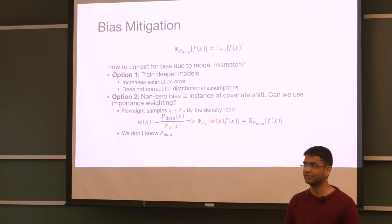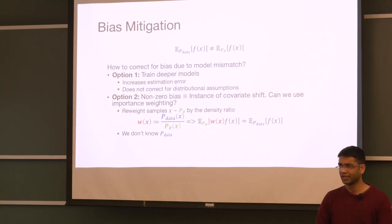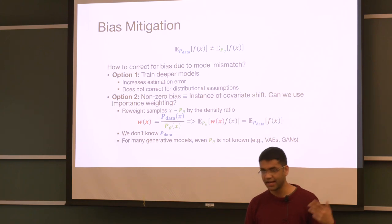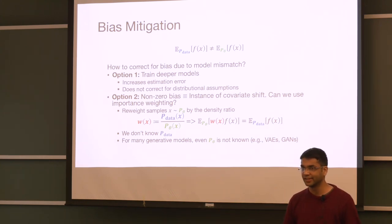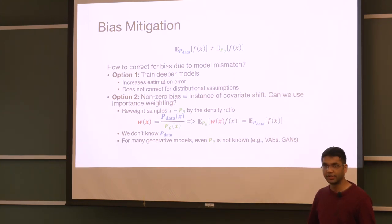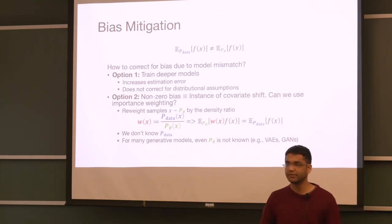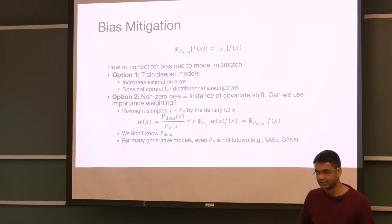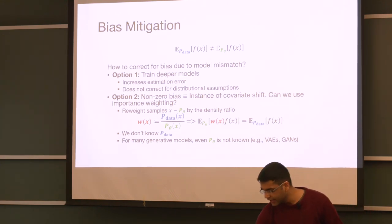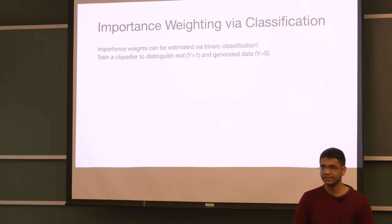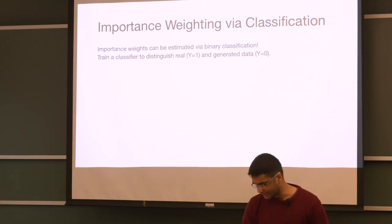The challenge of using importance weighting in this setup is that we don't know p-data — we only have samples from it. In fact, for many models, even p-theta itself is not known. For VAEs and GANs, we don't even know the model likelihoods, which are required for estimating these weights. So how do we get rid of this difficulty? Our procedure is to use a classifier to estimate the importance weights.